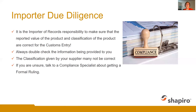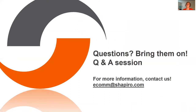Always double-check. Many clients come to us with a classification from their supplier in China or wherever they're importing from, and some of those numbers are incorrect or out of date. The US HTS schedule updates approximately every six months — and recently it's been updating even more frequently due to new regulations. If you're unsure, talk to a compliance specialist about getting a formal ruling or another opinion, and make sure you're confident in your information and have backup for it.